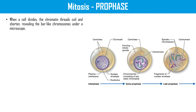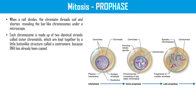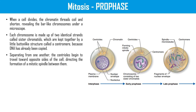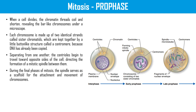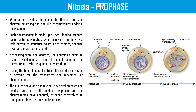In prophase, when a cell divides, the chromatin thread coils and shortens, revealing bar-like chromosomes under a microscope. Each chromosome is made up of two identical strands called sister chromatids, which are kept together by a button-like structure called a centromere, because DNA has already been copied. The centrioles begin to travel towards opposite sides of the cell, directing the formation of the mitotic spindle between them. The spindles serve as the scaffold for the attachment and movement of chromosomes. The nuclear envelope breaks down and disappears by the end of prophase, and chromosomes randomly attach themselves to the spindle fibres by their centromeres.